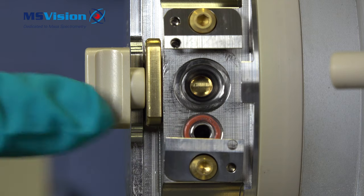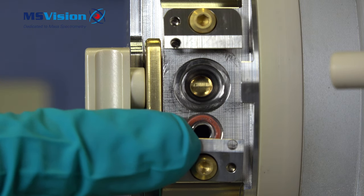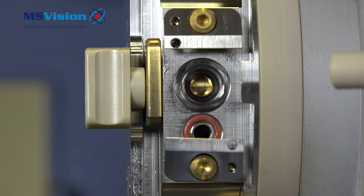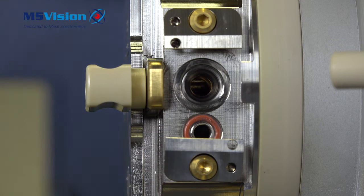You can see the isolation valve here is closed. This closes off the vacuum so that you can remove the cone after cleaning without venting the system. In this position you can see it's fully open.